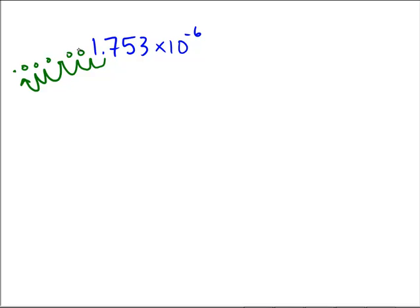5 zeros. And our answer is going to be... 1, 2, 3, 4, 5 zeros. 1, 7, 5, 3.